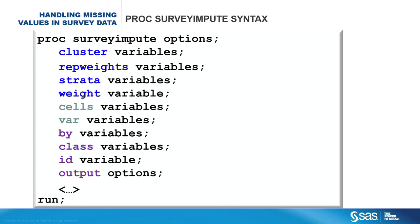The by, class, id, and output statements are common in many SAS STAT procedures. You specify a SAS dataset in the output statement to store the output data containing both the observed and imputed values.